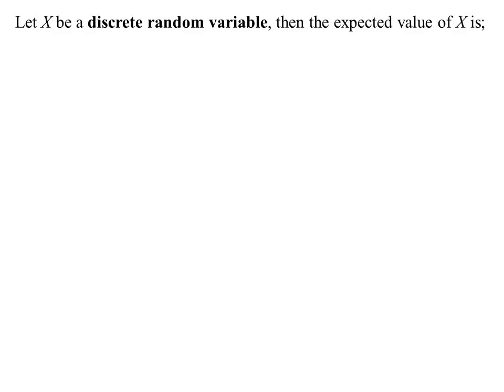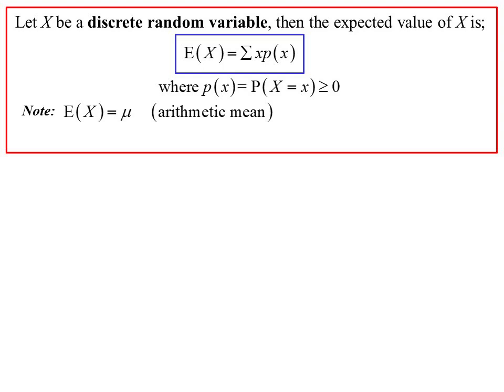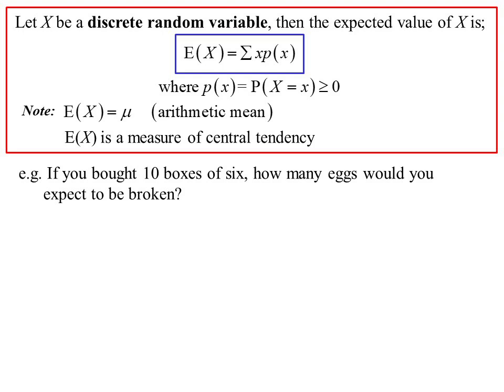X is the discrete random variable. The expected value is the sum of x·p(x), where p(x) is the probability of it happening. Expected value is the same as average or mean, a measure of central tendency - roughly where the middle of the data is. Let's say we're going to buy 10 boxes.